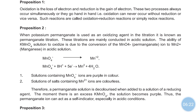This is a permanganometry type of titration where KMnO4 is used as the oxidizing agent. These titrations are carried out in the acidic medium. Here KMnO4 is oxidized — the MnO4 minus ion is converted.